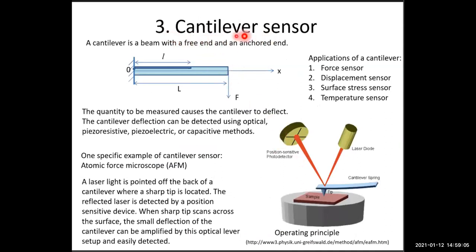Another example is a cantilever sensor. A cantilever is a beam with a free end and an anchored or fixed end — like a diving board above a swimming pool. Even though it is a very simple mechanical structure, a cantilever can have many applications: it can function as a force sensor, a displacement sensor, a surface stress sensor, a temperature sensor, and so on.